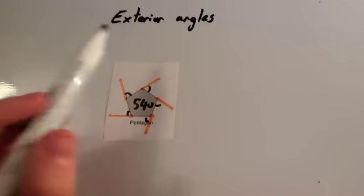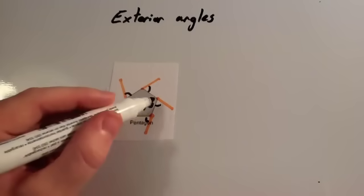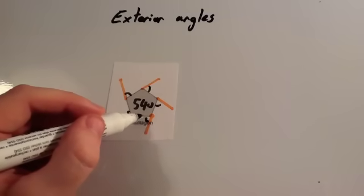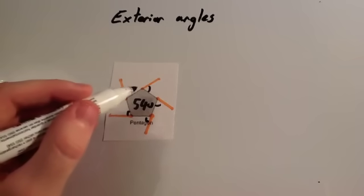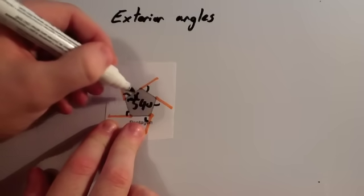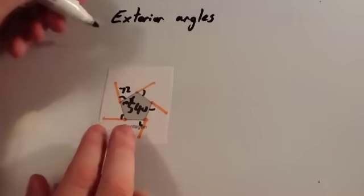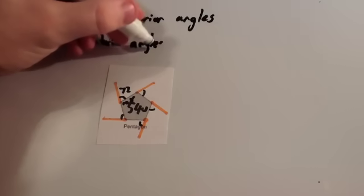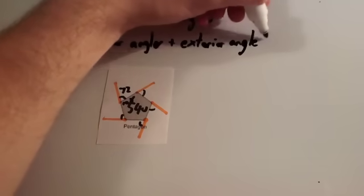We're now going to look at exterior angles. Polygons have interior angles inside the shape, but they also have exterior angles. If you carry on the sides and consider the angle formed between that extended line and the next side, those are what we call exterior angles. The first rule is: interior angle plus exterior angle always add together to give 180 degrees, because they make a straight line.